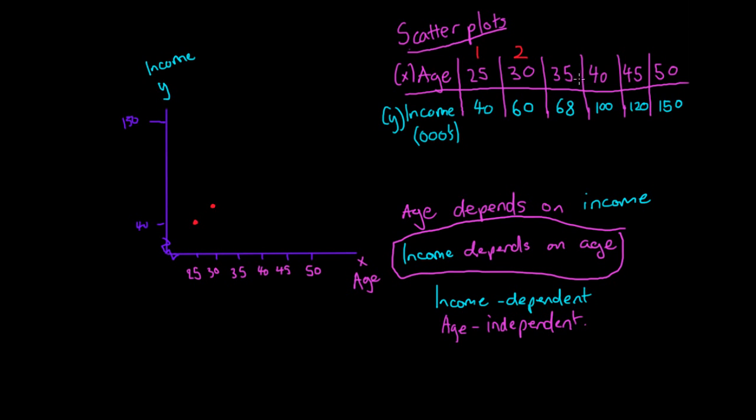Then we go to the next observation at 35 with an income of 68. We go up and plot that there, which is roughly 68,000.